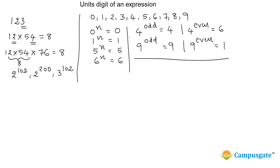Now we focus on four more numbers: 2, 3, 7, and 8. For these four numbers, we have to follow a simple technique. First, check whether the power is a multiple of 4 — simply divide the power by 4 and check whether it is divisible by 4. For example, 2 power 200: when you divide 200 by 4, the remainder is 0, so it is exactly divisible by 4, and you will get 6 as the unit's digit. When the power is a multiple of 4, for 3 you get 1, for 7 you get 1, and for 8 you get 6.